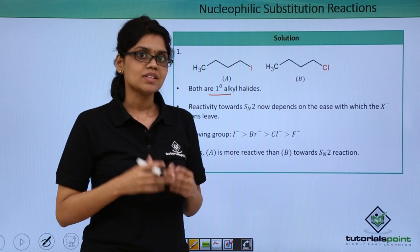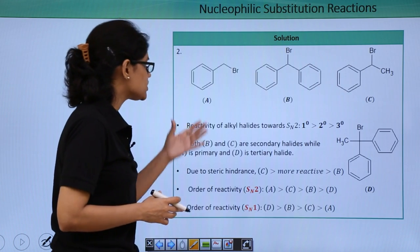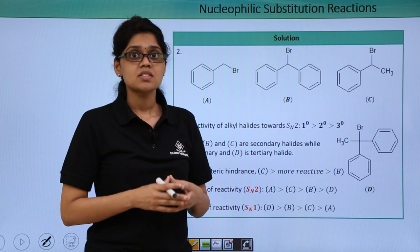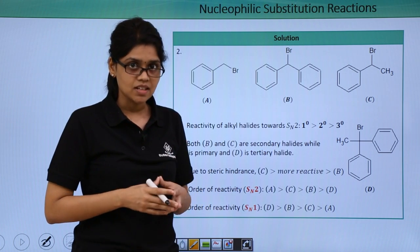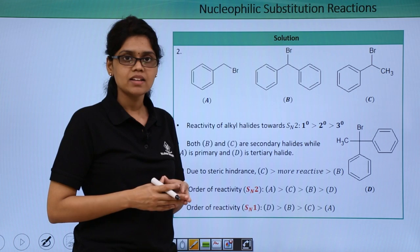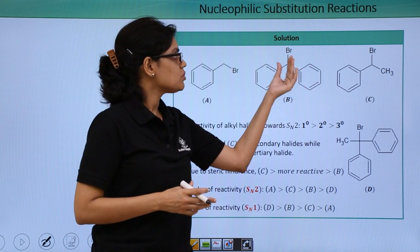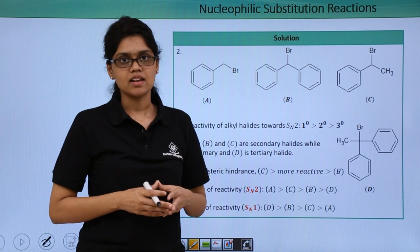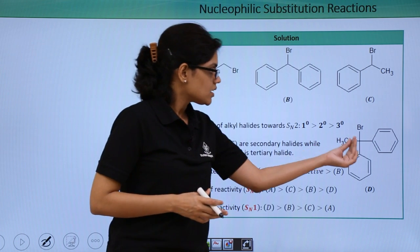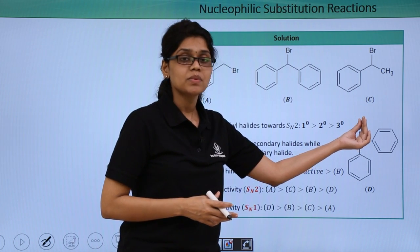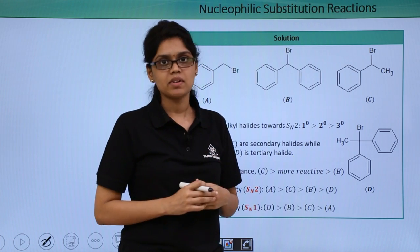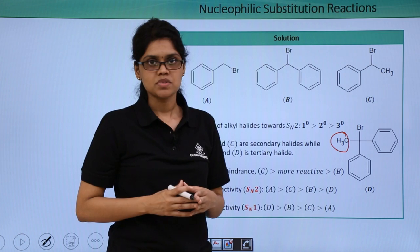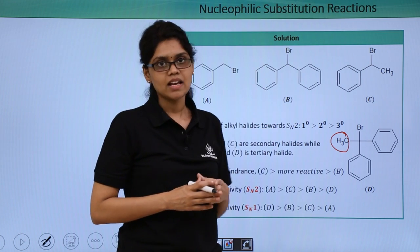Let us now try to solve the second set of compounds. Looking at the structures closely, we can see that structure A is a primary alkyl halide. Structures B and C are secondary alkyl halides, and structure D is a tertiary alkyl halide, because the carbon bearing the halogen group is attached to 3 carbon atoms — one methyl group and 2 carbon atoms each from the phenyl groups. B and C are secondary alkyl halides.